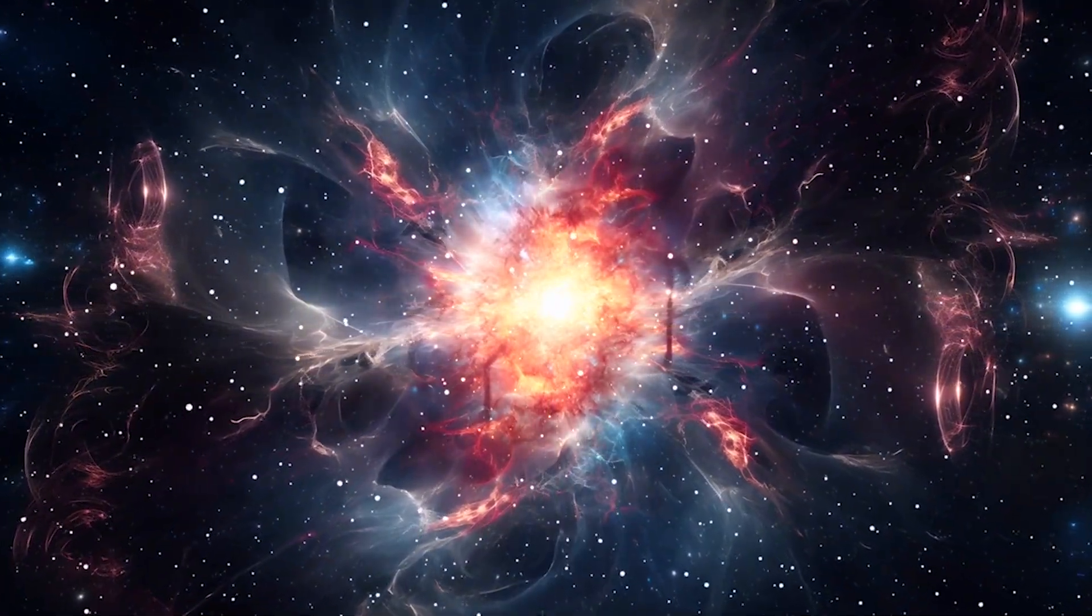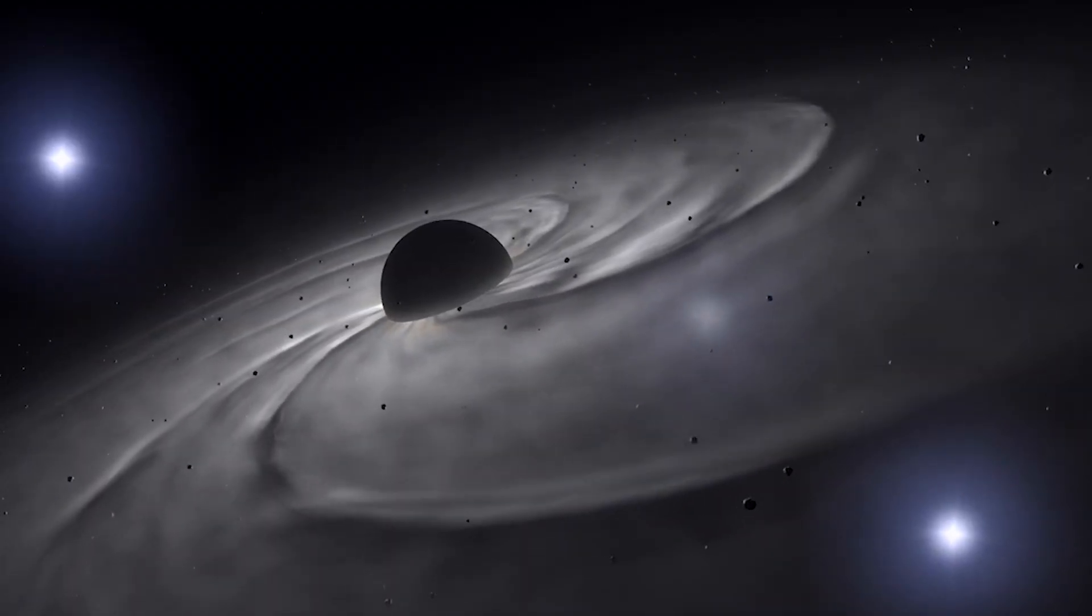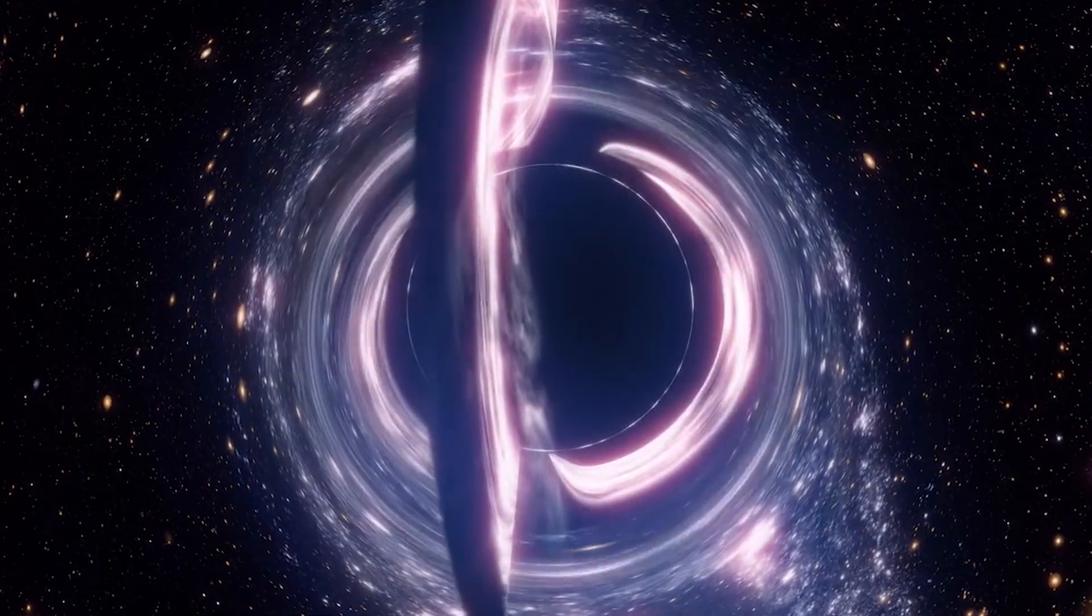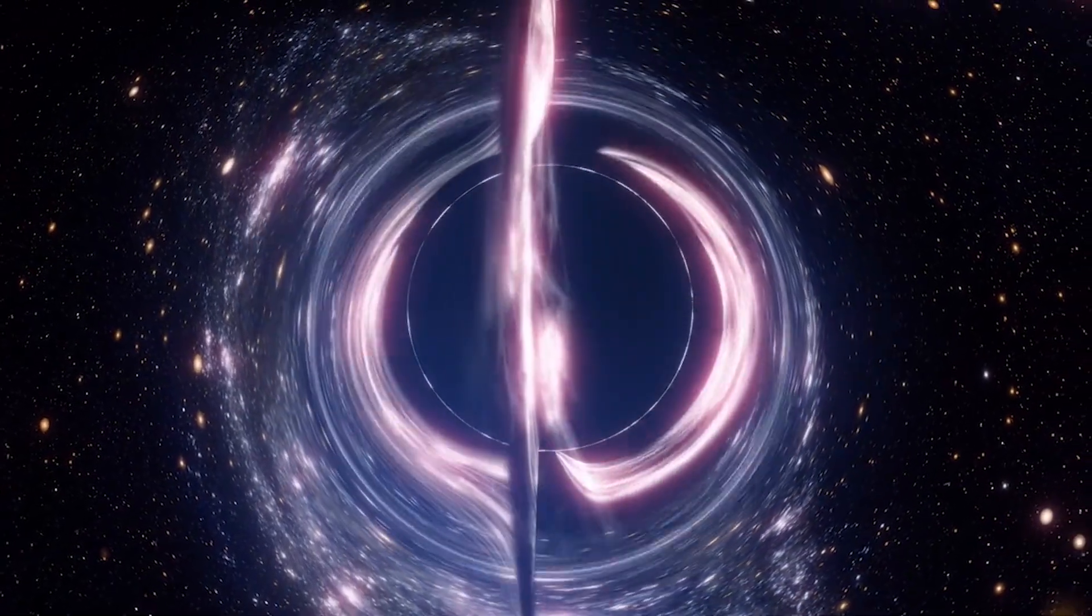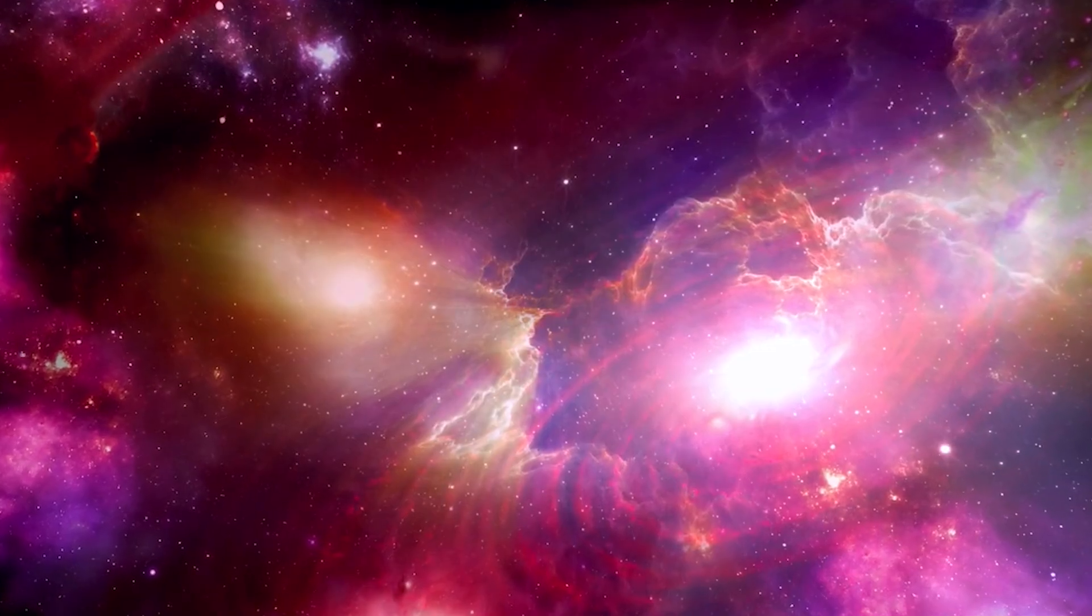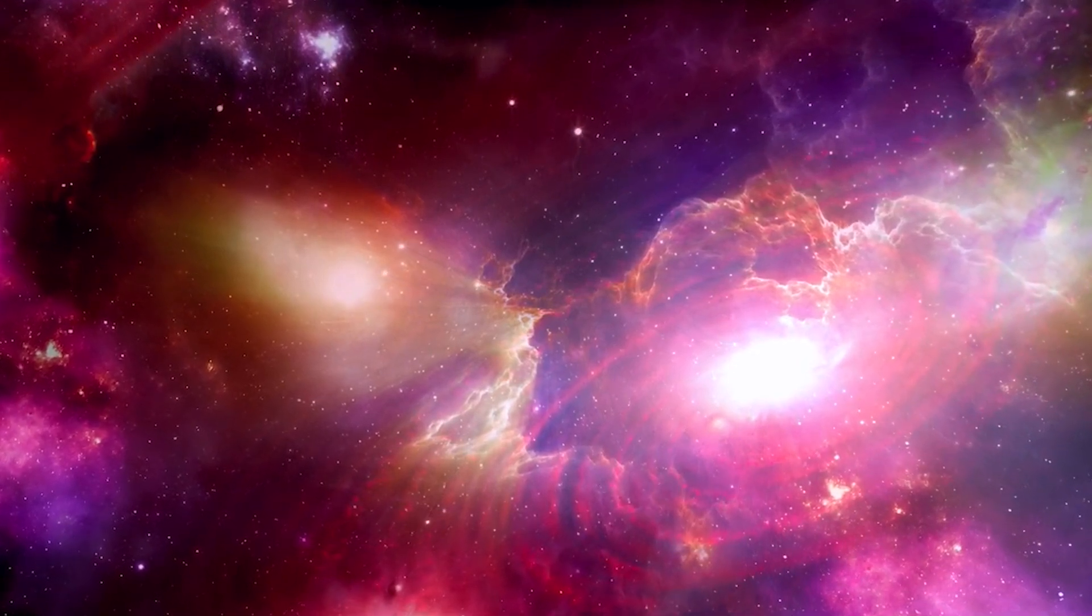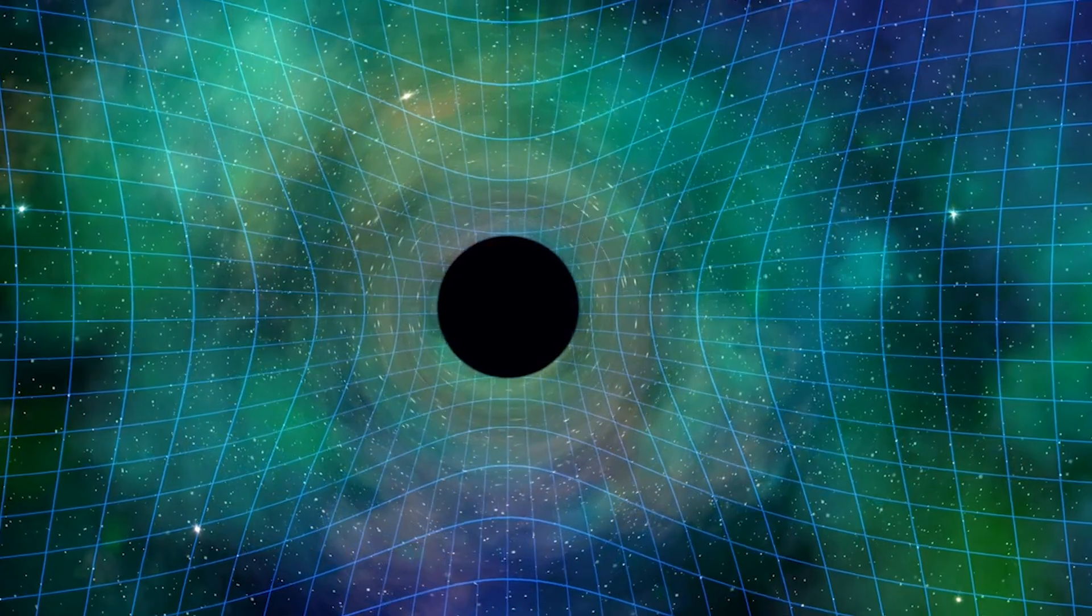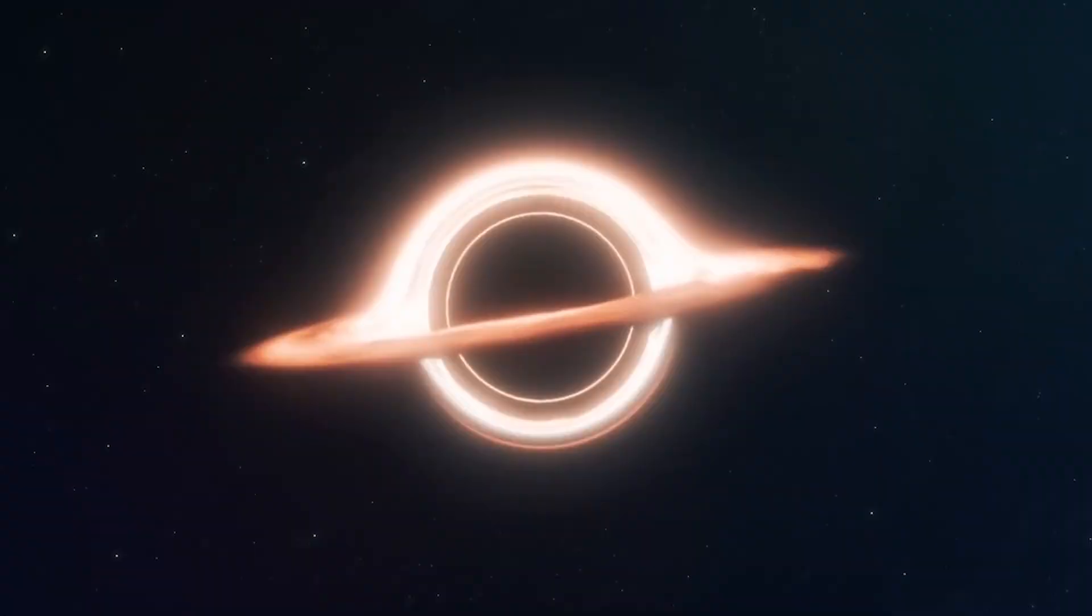Now let's take this deeper. The formation of the first galaxies is linked to the behaviour of dark matter. In Lambda CDM, cold dark matter clumps together to form gravitational wells. Gas then falls into these wells, cooling and forming stars. But if galaxies like MOMZ 14 formed so early, it suggests that small-scale structure formed faster than predicted.